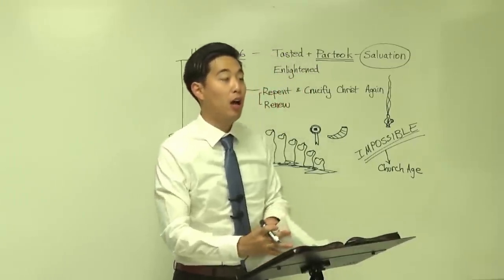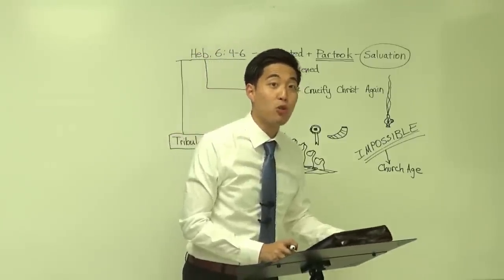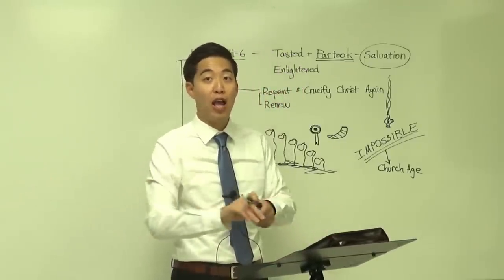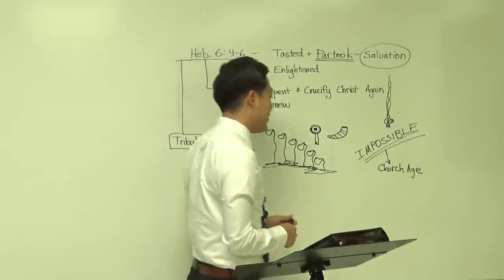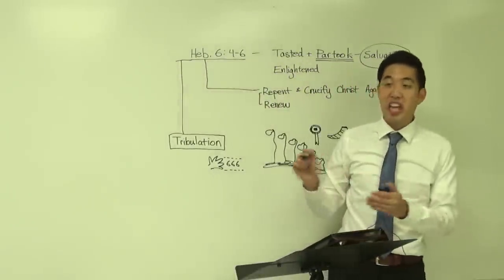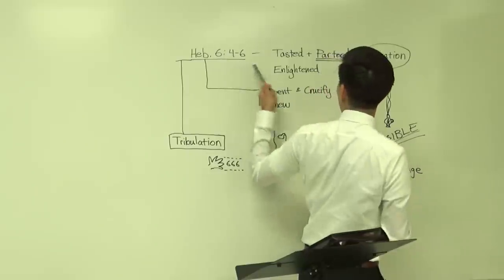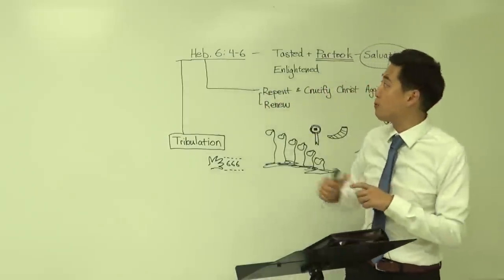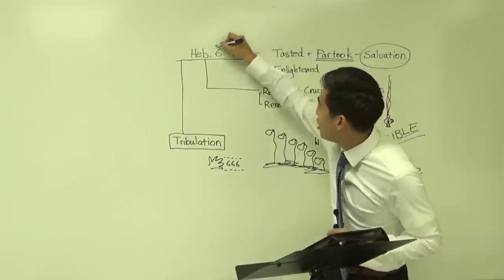Romans chapter 5 mentions over there that for when we were enemies, right? See, lost in sin, headed for hell, Christ died for us, right? So there's no doubt that you have to realize that, look, Christians can apply it that way since it's double application for Hebrews 6, but you can't make that 100%, alright? Because why? If you honestly go by context with Hebrews chapter 10, you can't escape a tribulation application there.